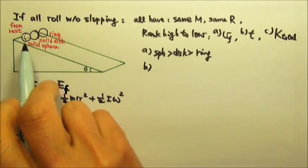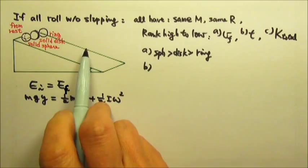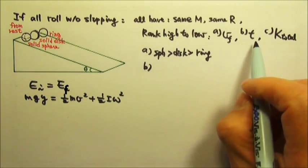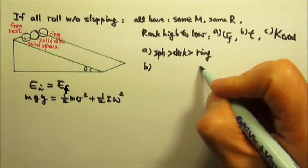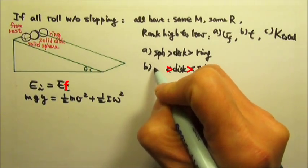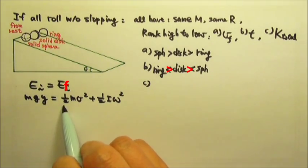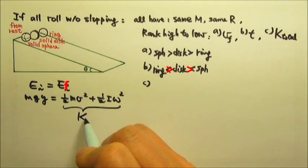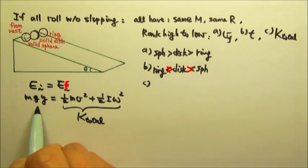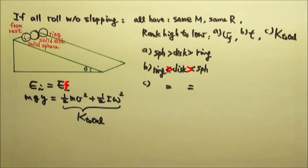For part B, since all of them undergo constant acceleration motion — just with different accelerations — the one that comes down fastest takes the least time. So the sphere takes the least time, then the disk, and the ring takes the longest. For part C, the total kinetic energy at the bottom equals mgy for all three, and they all start with the same mgy, so the total kinetic energy is equal for all of them.